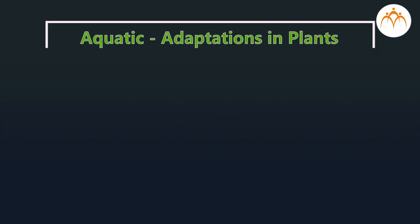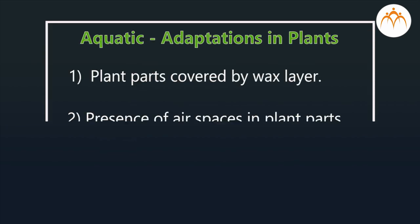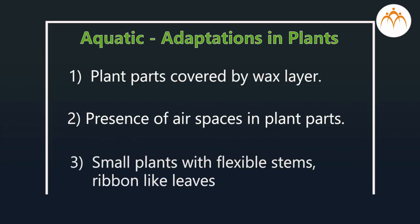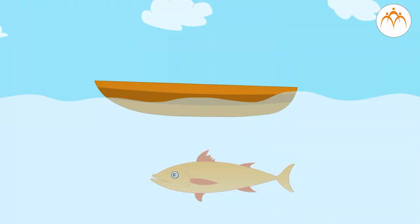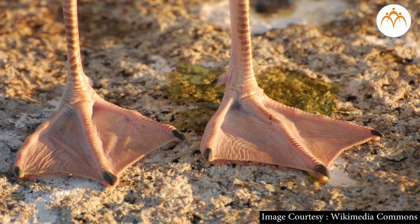Summary: Adaptations to survive in water are called aquatic adaptations. Flexible body, waxy coating on plant parts, boat-shaped body, webbed feet in animals, etc. are some commonly seen aquatic adaptations.